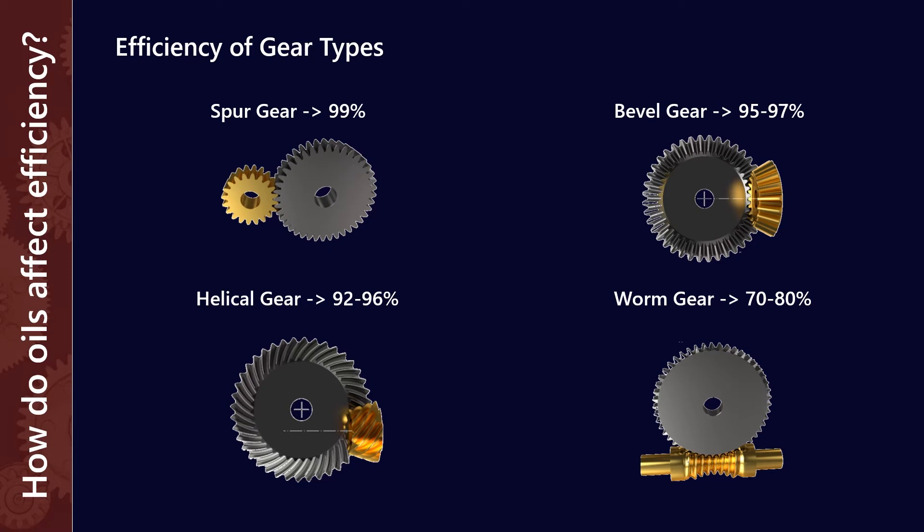The effect of this differs by gear type. Spur gears are very efficient in the base case, they're about 99% efficient for each mesh. So if we had a three-speed reduction gearbox, we would expect to lose about 1% energy for each reduction.